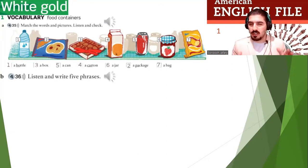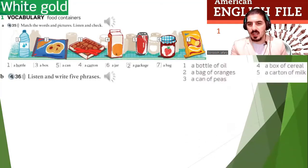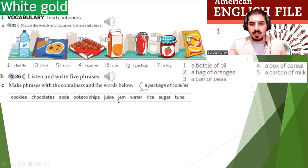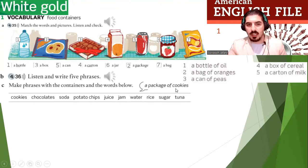Well done. Check your answers with your partner. The sentences are: a bottle of oil, a bag of oranges, a can of peas, a box of cereal, a carton of milk. Now everybody make phrases with the containers and the words below — cookies, chocolate, soda, potato chips, juice, jam, water, rice, sugar, tuna. For example, a package of cookies.